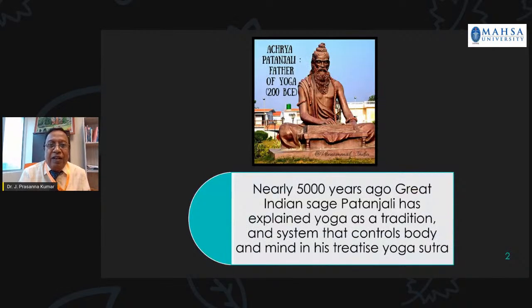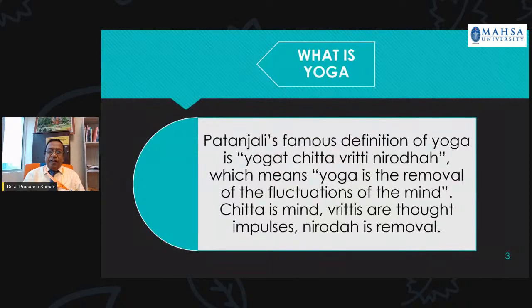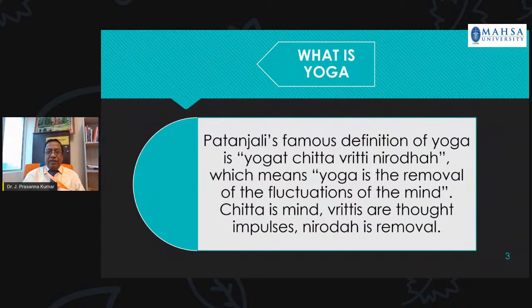Acharya Patanjali fathered yoga about 200 BCE. Nearly 200 BCE years ago, the great Indian sage Patanjali explained yoga as a tradition and system that controls the body and mind, in his Yoga Sutra. Patanjali's famous definition of yoga is 'yoga chitta vritti nirodaha,' which means yoga is the removal of the fluctuations of the mind. Chitta is mind, vritti is thought impulses, and nirodaha is removal.